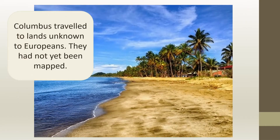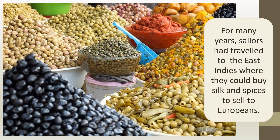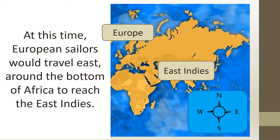Columbus travelled to land unknown to Europeans — they had not yet been mapped. For many years sailors had travelled to the East Indies where they could buy silk and spices to sell to Europeans. At this time European sailors would travel east around the bottom of Africa to reach the East Indies.